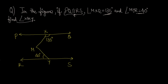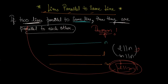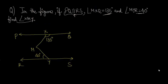So tell us how to find it. Obviously, we will use the concept of this video: if two lines are parallel to the same line, then they are parallel to each other. What we do is make a line AB from point M, drawing it parallel to PQ.